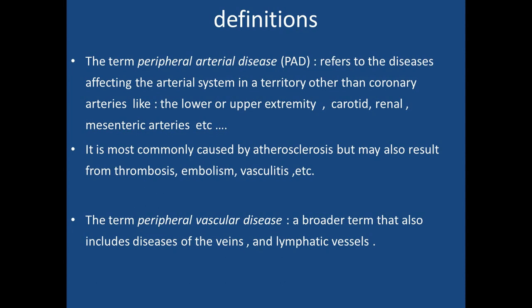The term peripheral vascular disease is a broader term than peripheral arterial disease. Peripheral vascular disease involves the arteries, veins, and the lymphatic system, while peripheral arterial disease refers specifically to disease of the arteries other than the coronaries, and is predominantly an atherosclerotic process.